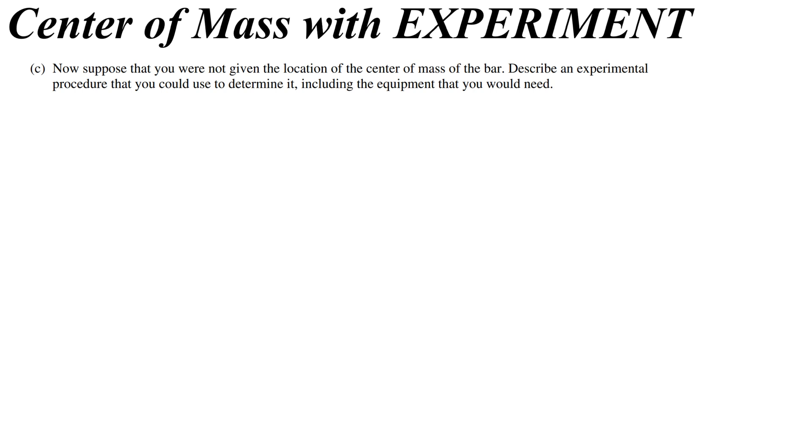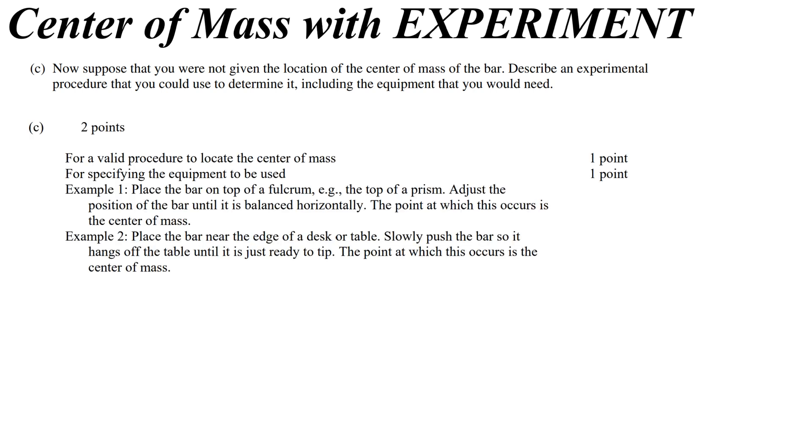Now, if you can imagine, the center of mass is the balancing point of an object. So all you have to do is balance it on something. You could balance it on your finger. You could balance it on like a triangle or something that has a really thin point. Or you could just kind of push it off the edge of the table until it begins to tip. Then you find the balancing point. And guess what? Those are the actual answers that you have on this question.